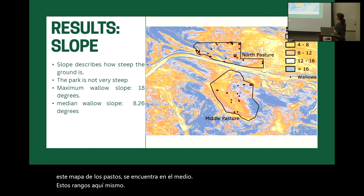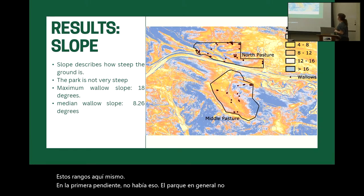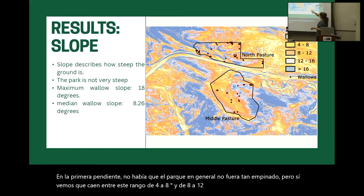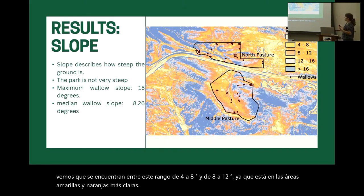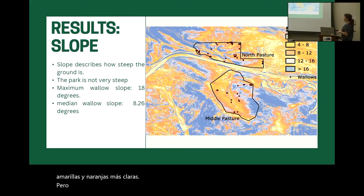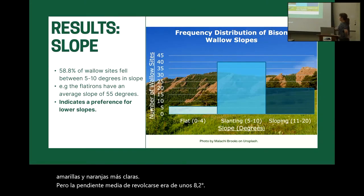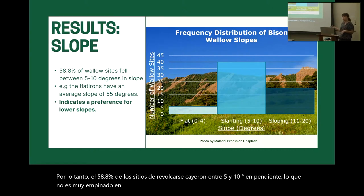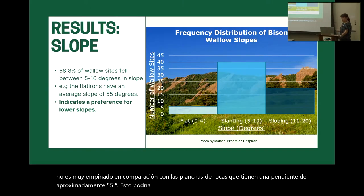For slope, the park overall was not that steep. We do see that wallows fall between the 4 to 8 degree and 8 to 12 degree ranges. The median wallow slope was about 8.2 degrees, and 58.8% of wallow sites fell between 5 to 10 degrees in slope, which is not very steep at all in comparison to the Boulder Flatirons, which have a slope of about 55 degrees. This could indicate a preference for lower slopes.